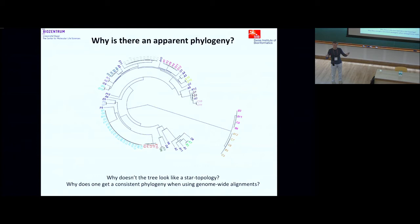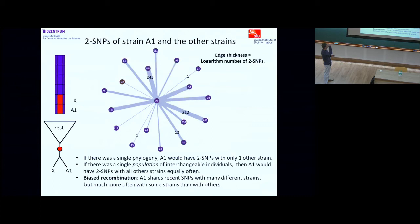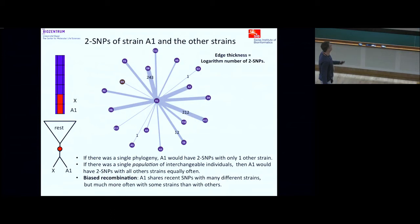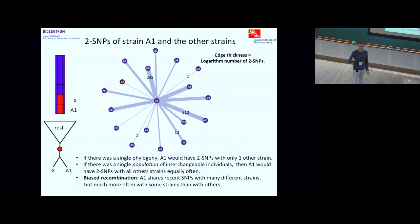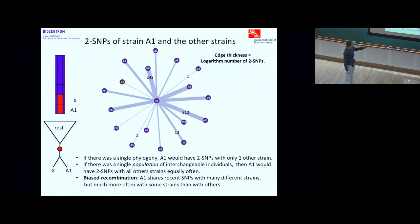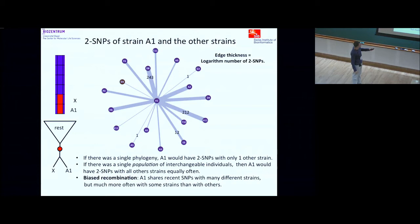To gain insight, we started looking at SNPs of a particular kind — columns where only two strains have a letter different from everybody else's. I'm looking at columns where strain A1 is different from the rest and one other strain is also different. I call these 'pair-SNPs.' For example, there are 212 columns where A1 and A11 share a letter different from everybody else, 12 columns where A1 and E6 share such a letter, and so on.